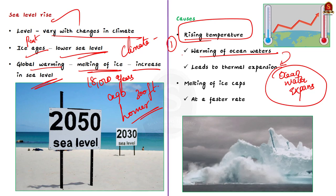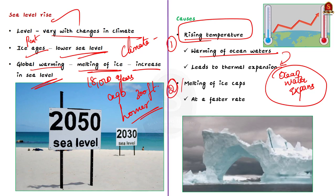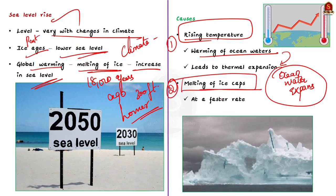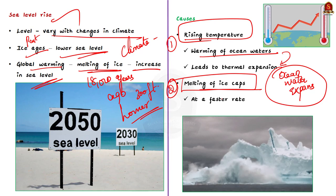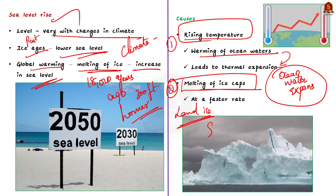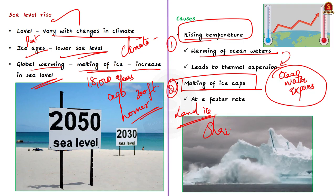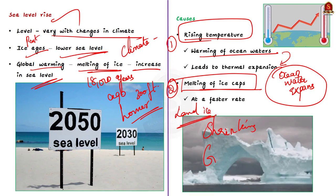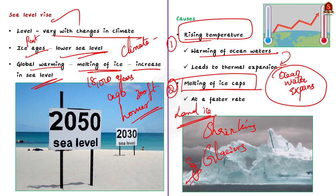The second reason is the result of the first one, which is the melting of ice caps. Land ice — that is glaciers, ice caps and ice sheets — are shrinking at a faster rate in response to rising temperatures, thus adding water to the world's oceans.